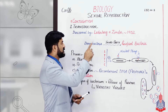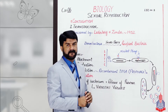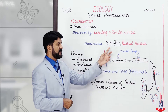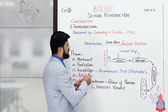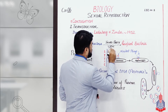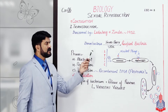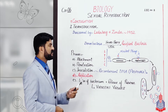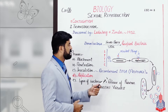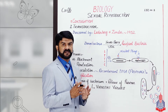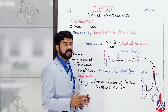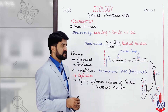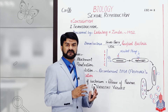جہاں سے gene move کر رہے ہیں وہ ہے donor bacterium اور جہاں پر move کر رہے ہیں وہ ہے recipient۔ آپ کو پتا ہے کہ جو virulent virus یا phage ہے یہ آ کے سب سے پہلے land کرتا ہے on the surface of the bacterium۔ Landing کے بعد یہاں پر proper bonding ہوتی ہے اور اس bonding کے result میں یہ والا phage اب اس bacterium سے جدا نہیں ہو سکتا۔